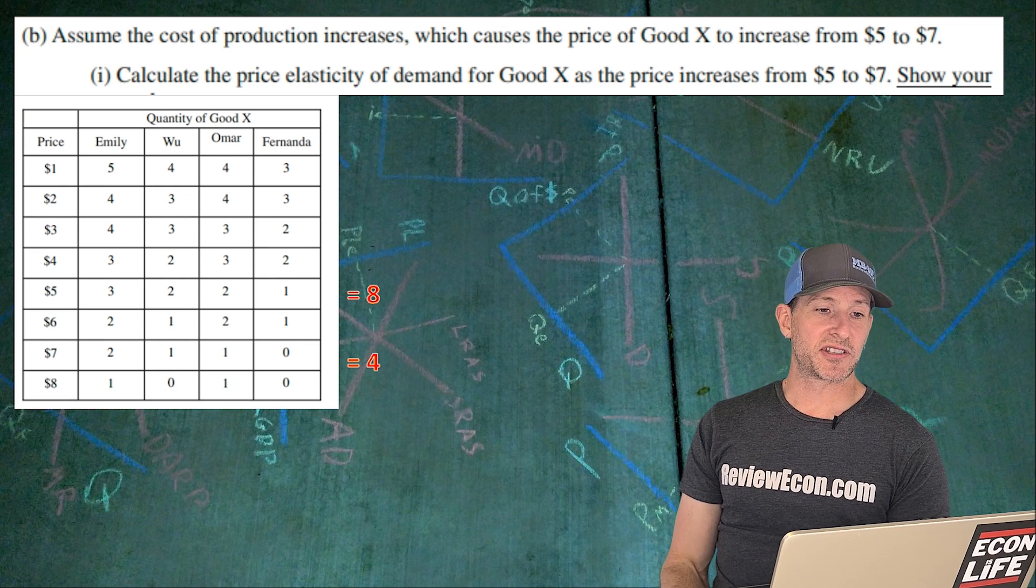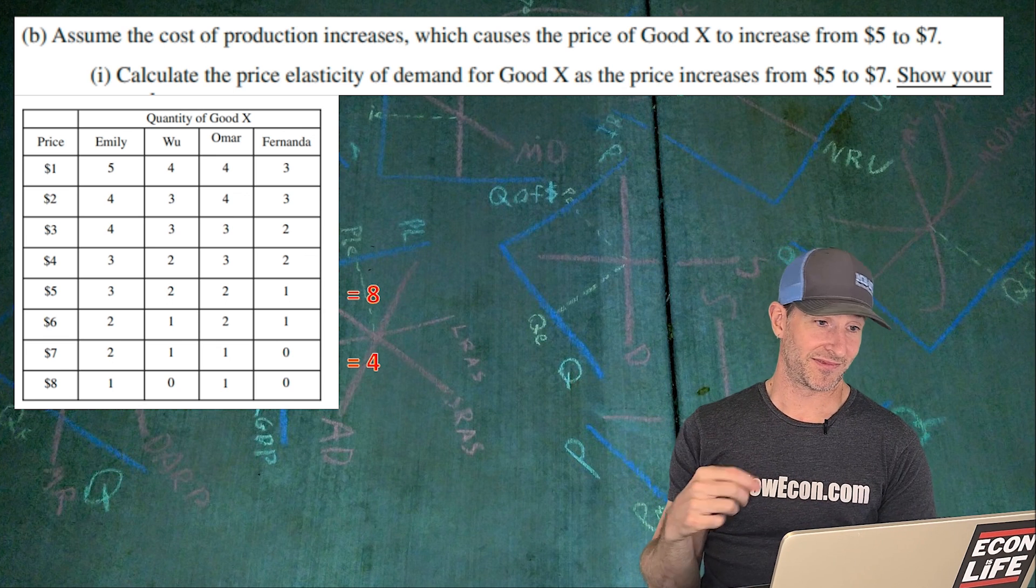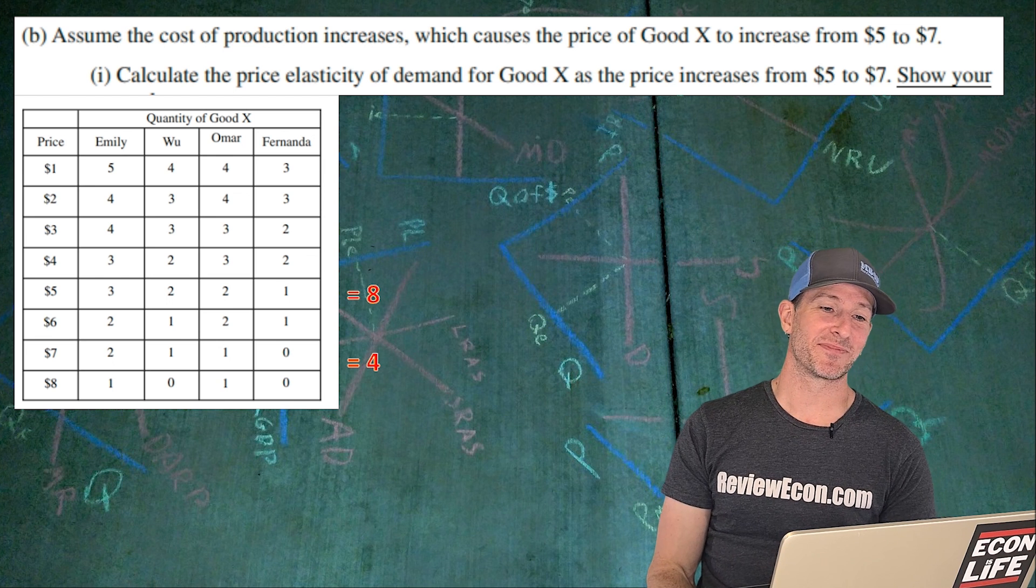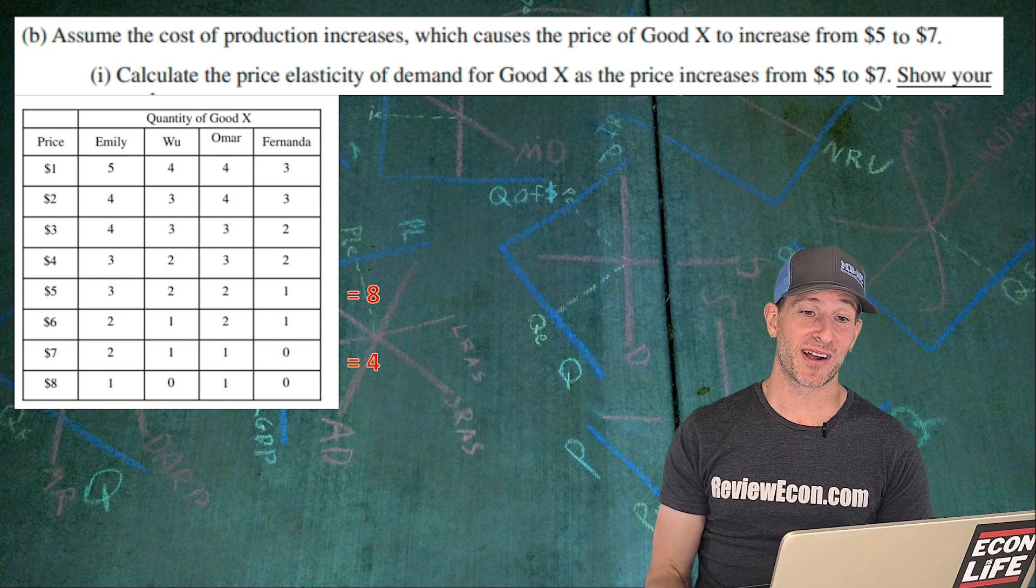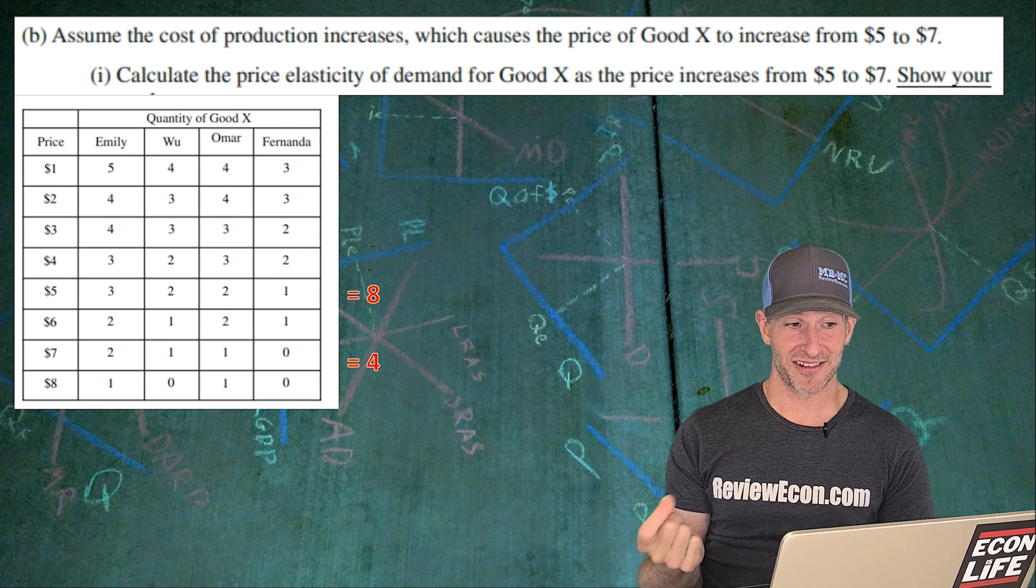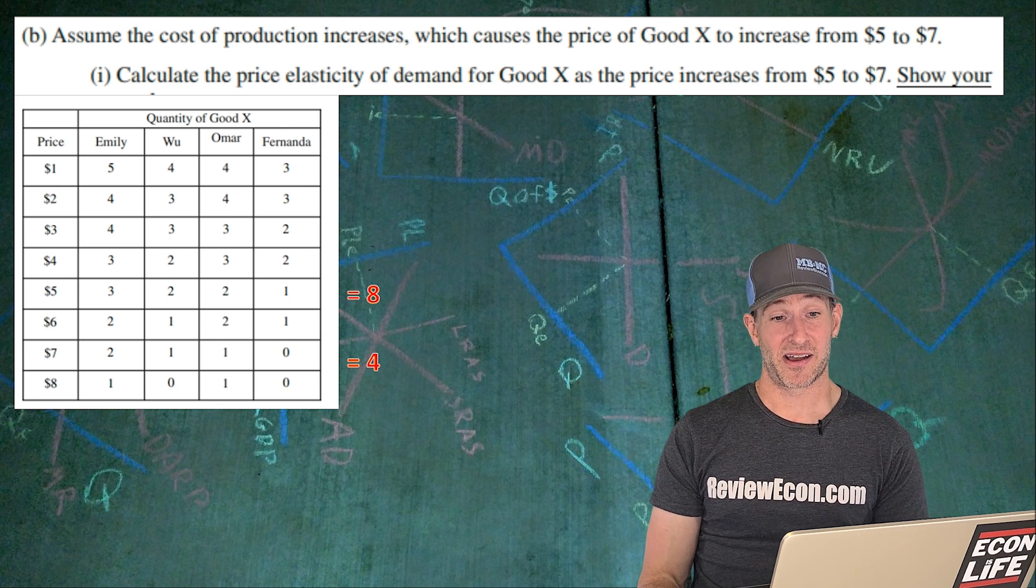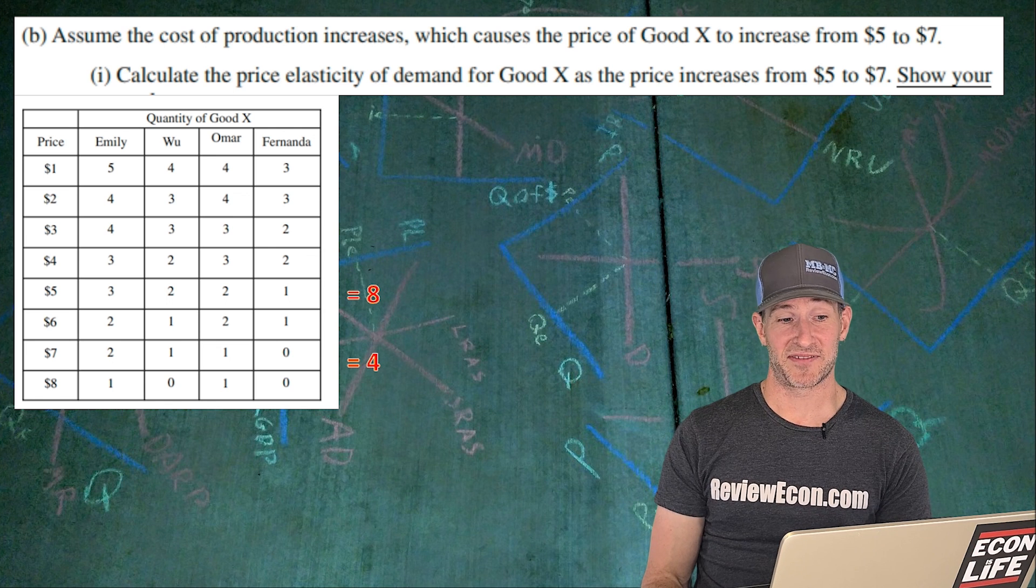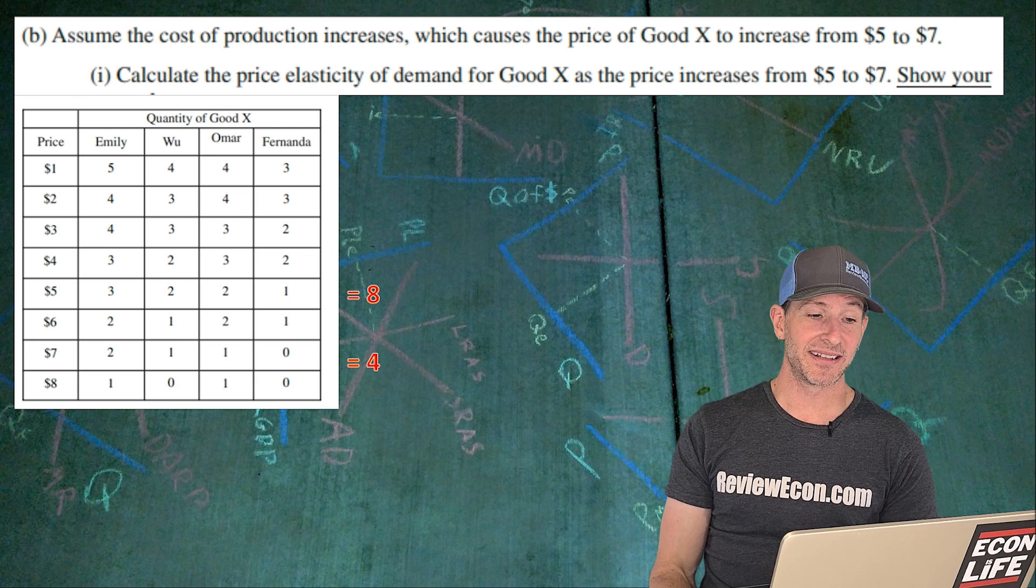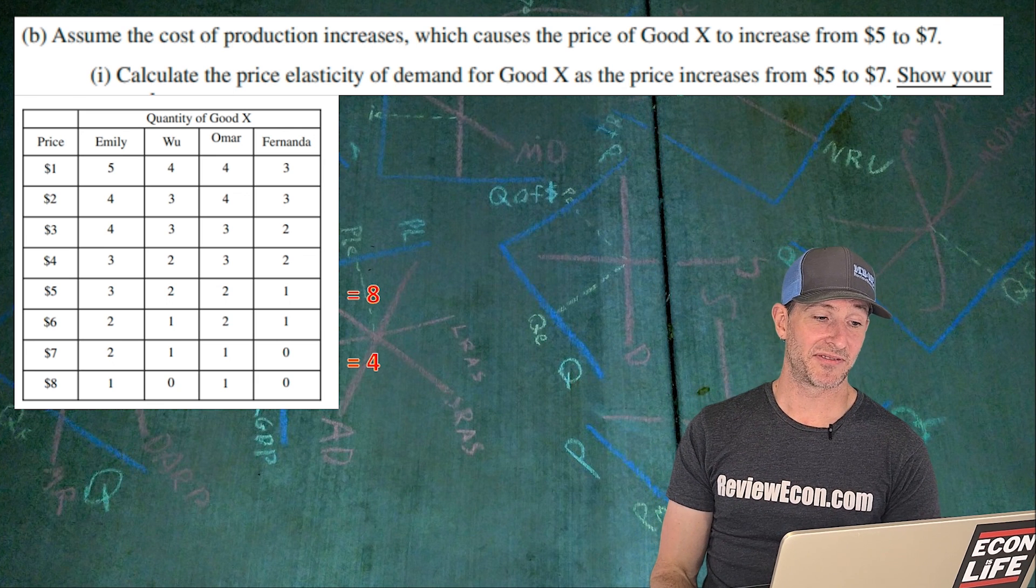Over for B, we're going to assume that production increases... Oh actually, let me rephrase that. We're going to, for part B, we're going to assume the cost of production increases which causes the price of good X to increase from five to $7. We're going to calculate the price elasticity of demand for good X if the price increases from five to seven, and then we're going to show our work. So as you can see, I have it marked there. As far as the quantities demanded in the market, we're at eight units of output at $5 and we're going to have four units of output at $4.